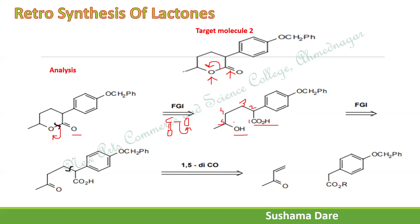Follow the FGI path: convert the OH group into a carbonyl group. Once converted, it gives a known 1,5-dicarbonyl compound. Number from any direction as 1,5. The 1,5-dicarbonyl compound is synthesized by a retro-Robinson annulation reaction — first a retro-Michael addition, specifically a retro-1,4-Michael addition reaction. To disconnect, we can break either the 2,3-bond or the 3,4-bond. Since carbon 4 is more substituted than carbon 2, we select the 3,4-disconnection in the direction of C4.